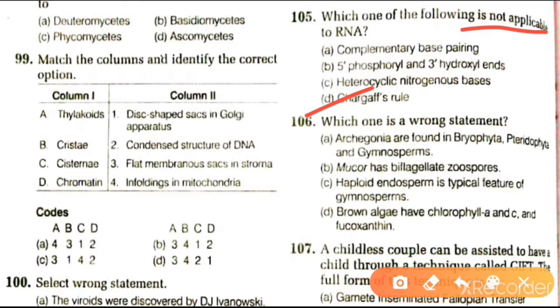Next question: which one is the wrong statement? Options include archegonia are found in bryophytes, pteridophytes, and gymnosperms; Mucor has biflagellate zoospores.